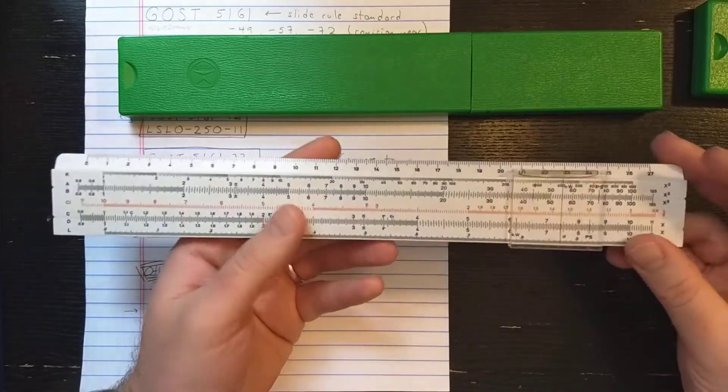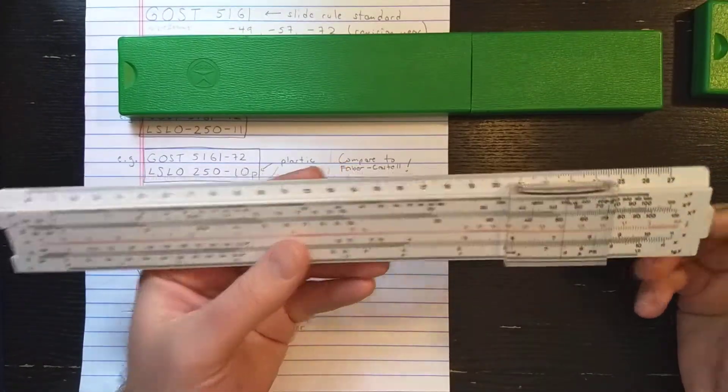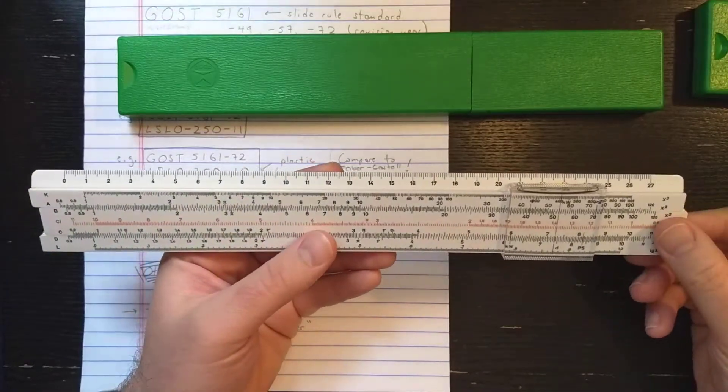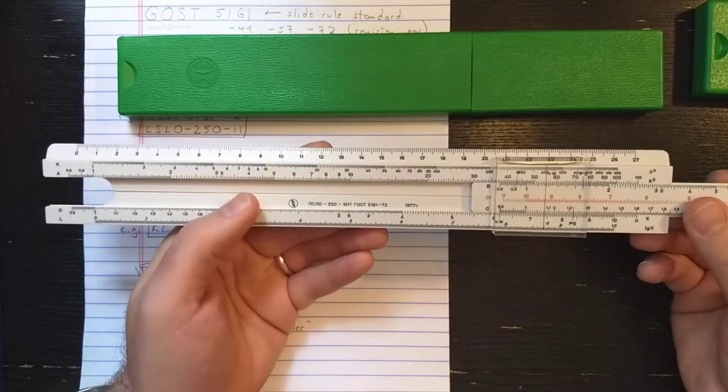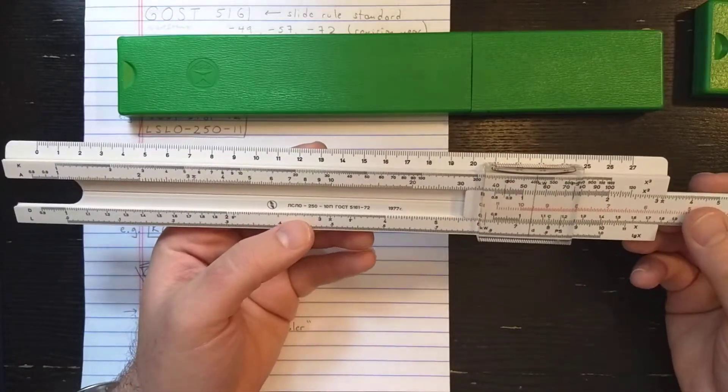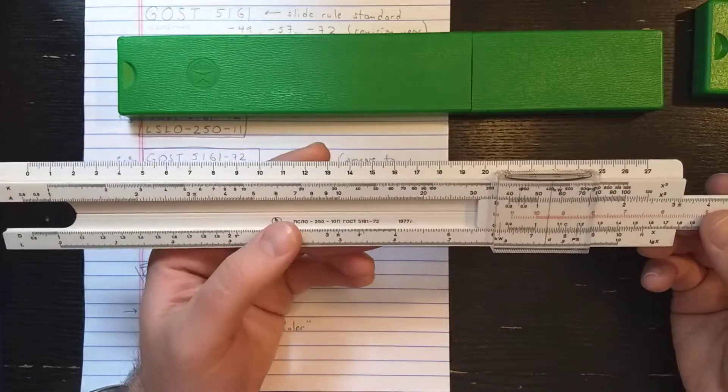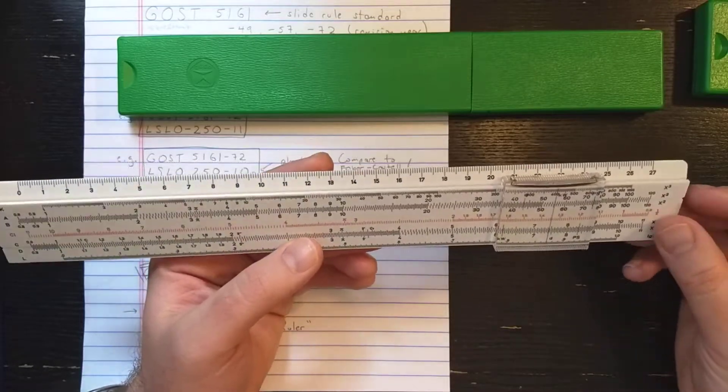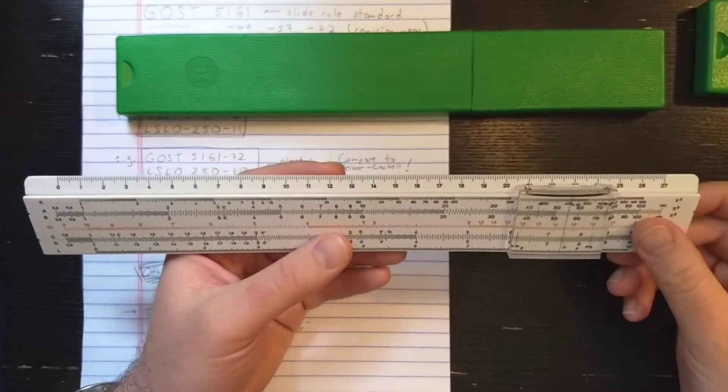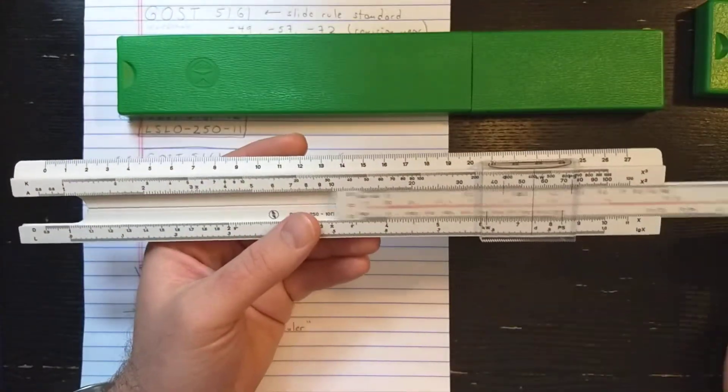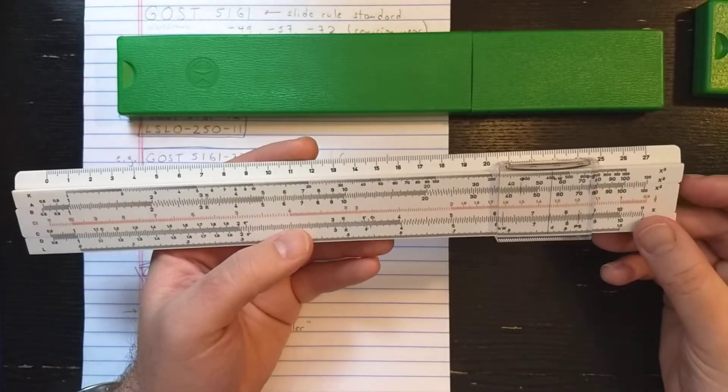This is a really nice late model Rietz style slide rule. If you're looking for something cheap, these can be found, shipped to you, less than $20. Even new or almost new. You see this one is from 1977, but this slide rule is produced into the 80s, believe it or not. So you can find some very new examples.